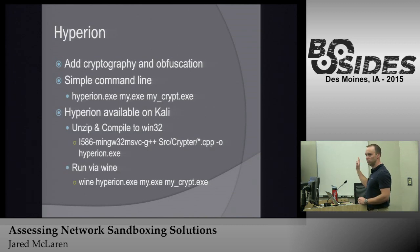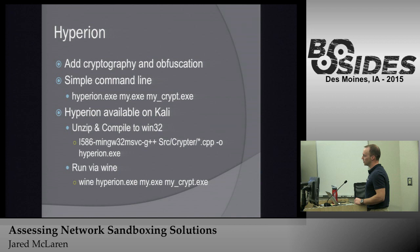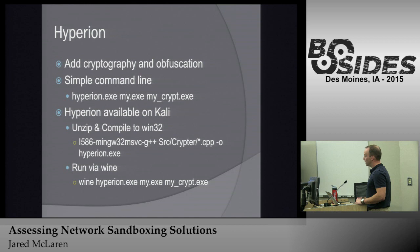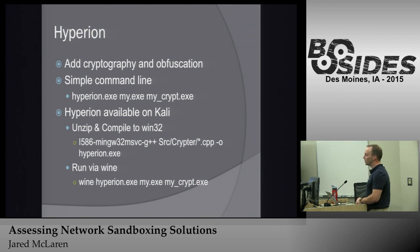Hyperion — if you're a Kali Linux user, it's already on the system. Just unzip it, compile it with the Windows compiler, and run it via Wine on your Kali instance — completely self-contained. You take the executable you made in Metasploit, run Hyperion on it, and get a crypted output that's more difficult for antivirus to catch. If the sandbox is truly doing heuristic analysis, it should still catch it. If it doesn't, go back to your vendor and ask why they can't catch something as simple as that.